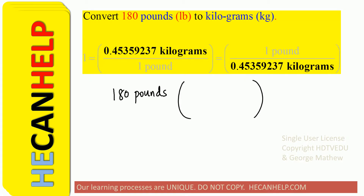We multiply by 1. So 180 pounds, we multiply that by 1. What is 1 equal to? 1 is the same as 1 pound divided by 1 pound. 1 pound is equal to 0.45359237 kilograms. Well, 0.45359237 kilograms is equal to 1 pound.